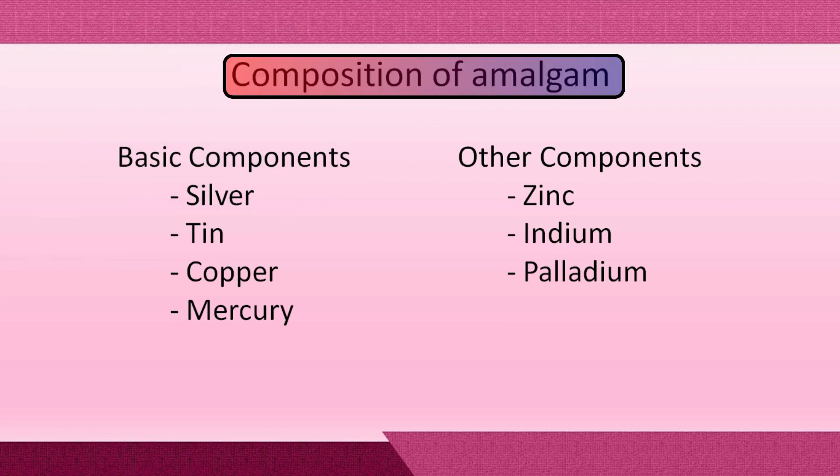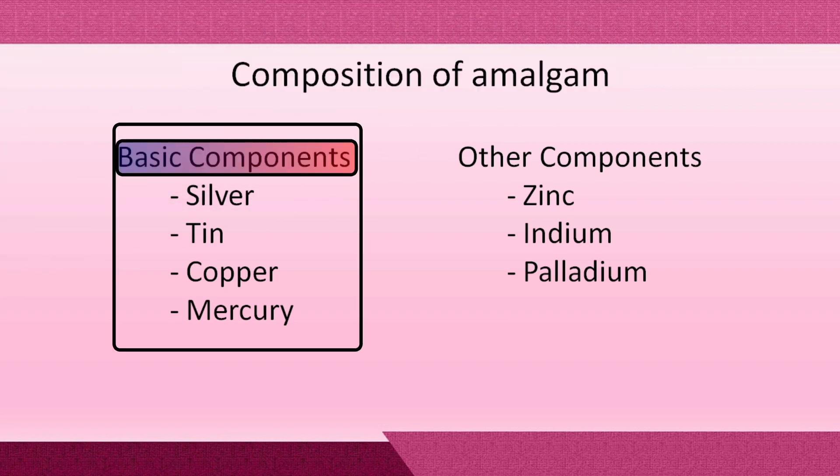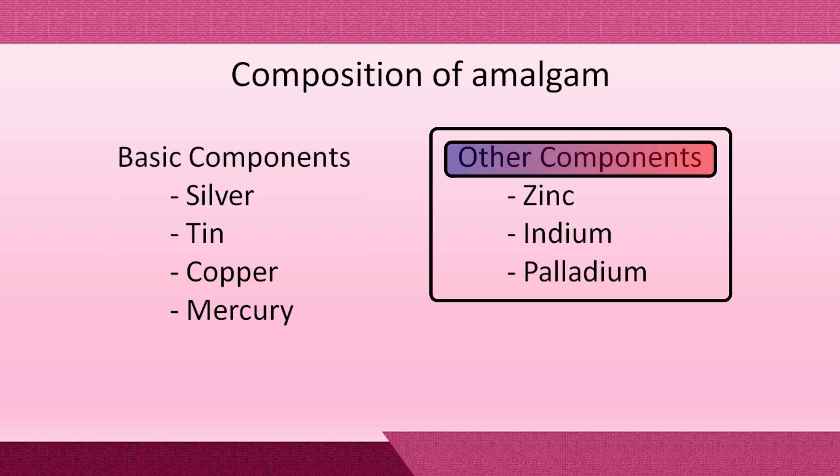The basic components of amalgam are silver, copper, tin, and mercury. Other components include zinc, indium, and palladium.